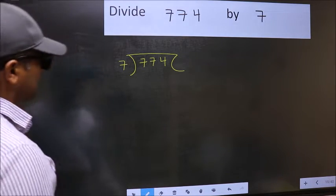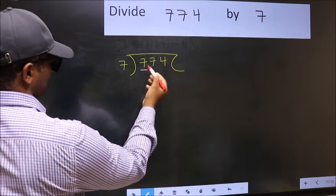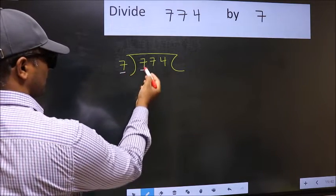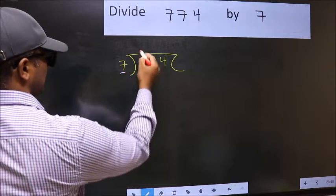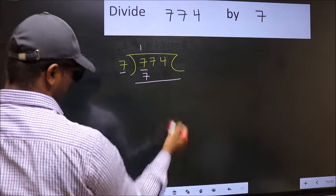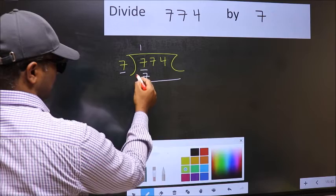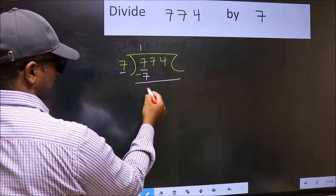Next. Here we have 7 and here also 7. When do we get 7 in the 7 table? 7 once is 7. Now you should subtract. 7 minus 7, 0.